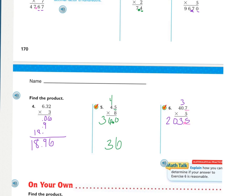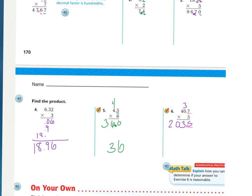And math talk, how can I determine if my answer in six is reasonable? Well, if I go forty, I'm going to go forty times five. And that is forty times five. So, that's twenty. Adding my zero is close to two hundred. Two hundred three and five tenths is close to two hundred. So, it is good.